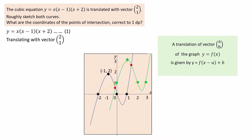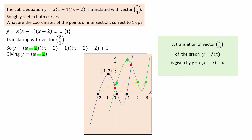Using the general rule for a translation with vector (a, b) for a function in x, the equation for the translation becomes the function of (x minus a) plus b. Using this rule, x becomes x minus 2, x minus 1 becomes (x minus 2) minus 1, and x plus 2 becomes (x minus 2) plus 2, plus b which is 1. Simplifying gives y equal to (x minus 2)(x minus 3)(x) plus 1. Rearrange and call this equation 2.